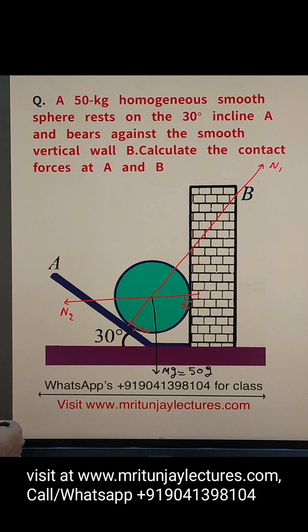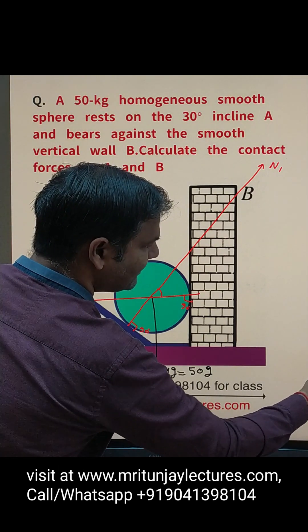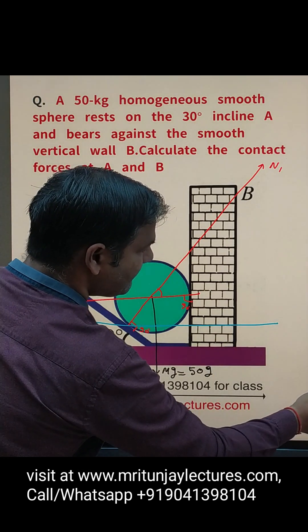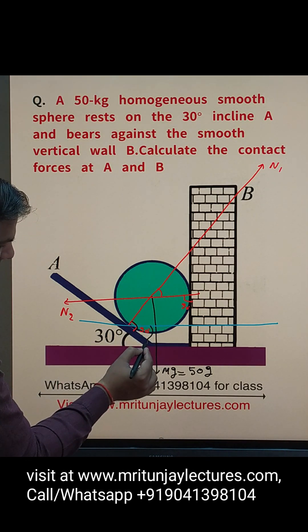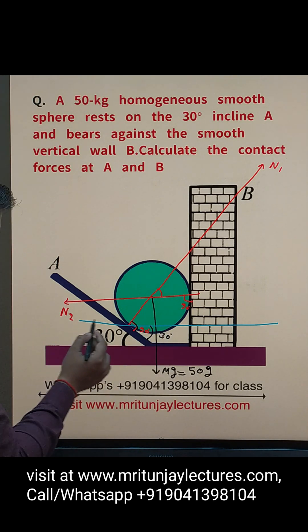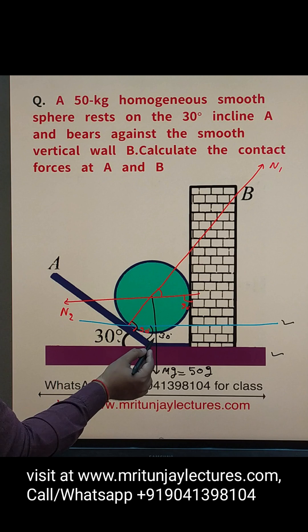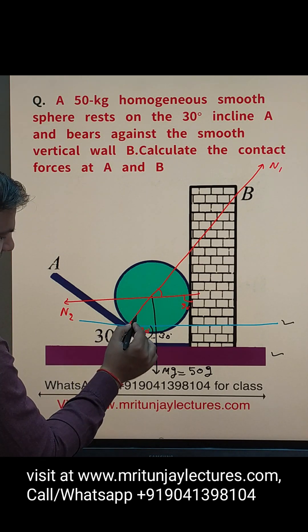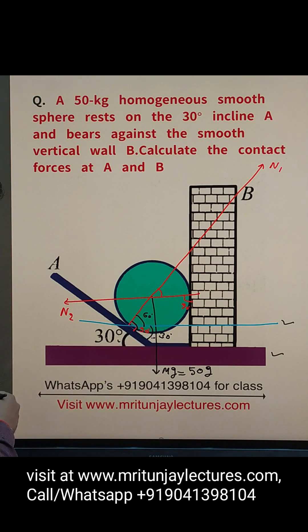Now what about that angle? If you see very carefully, total angle is 90 degrees. That angle is 30 degrees, so that is also 30 degrees. Why? Because this line and this line are parallel, and that line intersects, so that angle and that angle are the same. Then what about that angle? That is 60 degrees. Because the total angle is 90 degrees, this one is 30, so that is 60 degrees.